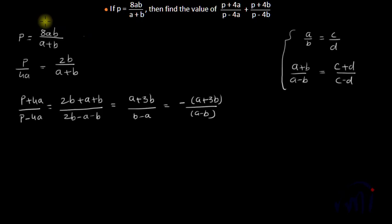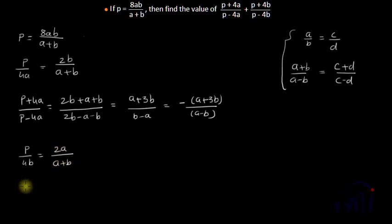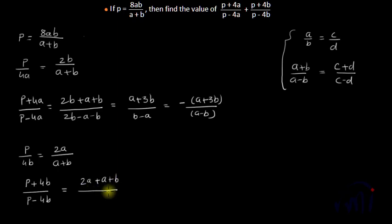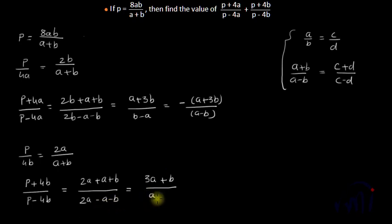Similarly, dividing by 4b, I get p/4b = 2a/(a+b). Applying componendo-dividendo on this gives (p+4b)/(p-4b) = (2a + a+b)/(2a - a-b), which equals (3a+b)/(a-b).